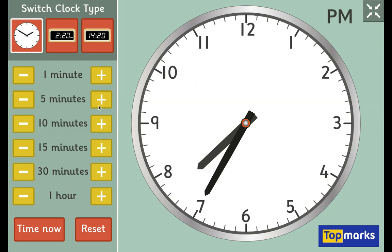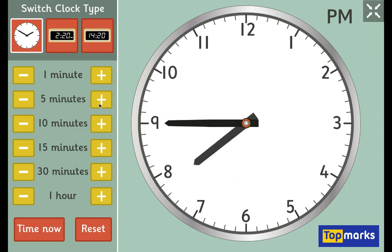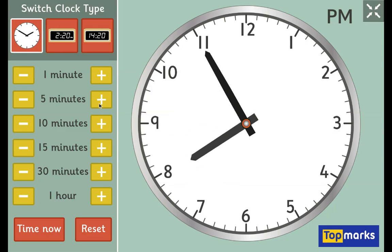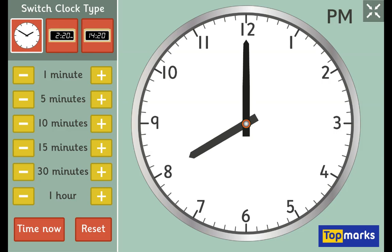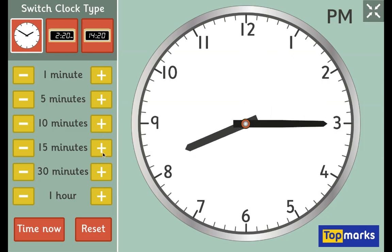Let's see what happens when it gets to 0. You see how the little hour hand is also just moving slightly? And now it's 8 o'clock. If we add on 15 minutes to this, then it would be 15 minutes past 8, which is also called quarter past 8, because we've gone a quarter of the clock.